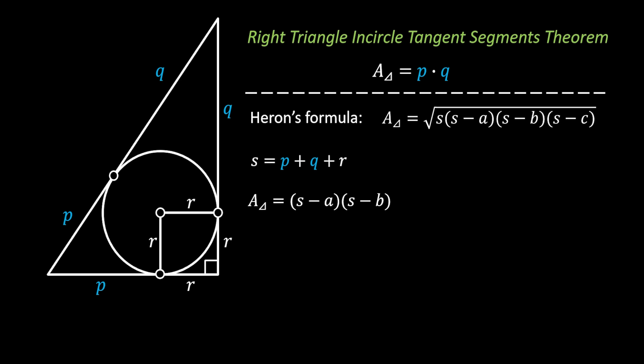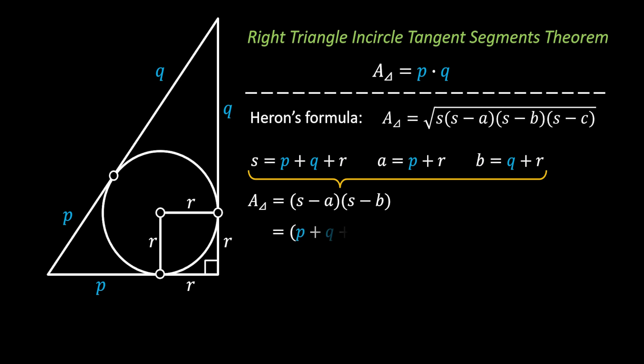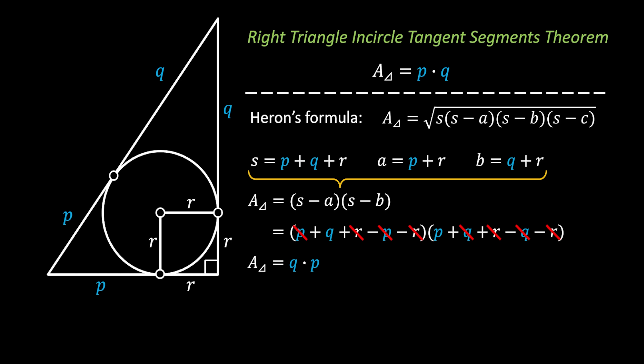We know the legs of our triangle are equal to p plus r and q plus r respectively. Using those three equations and substituting into the area formula, we simplify the left bracket by cancelling p and r, and the right bracket by cancelling q and r. We are left with the area of our triangle equal to the product of p and q, which is the proof of the theorem we mentioned earlier.